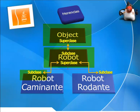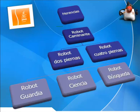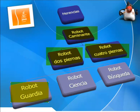Robot caminante tiene una única superclase que es robot, pero hereda también de Object. Y así seguimos dentro de esta jerarquía ampliándola todo lo que queramos. Por ejemplo, robot caminante puede ser superclase de robots con dos piernas y robots con cuatro, y dentro de los de dos piernas: el robot de guardia, el de ciencia, el de búsqueda, y dentro del robot de ciencia podríamos incluir el robot de exploración de volcanes. Donde localizar las distintas cualidades requiere importante planificación y revisión para elaborar buenas jerarquías.